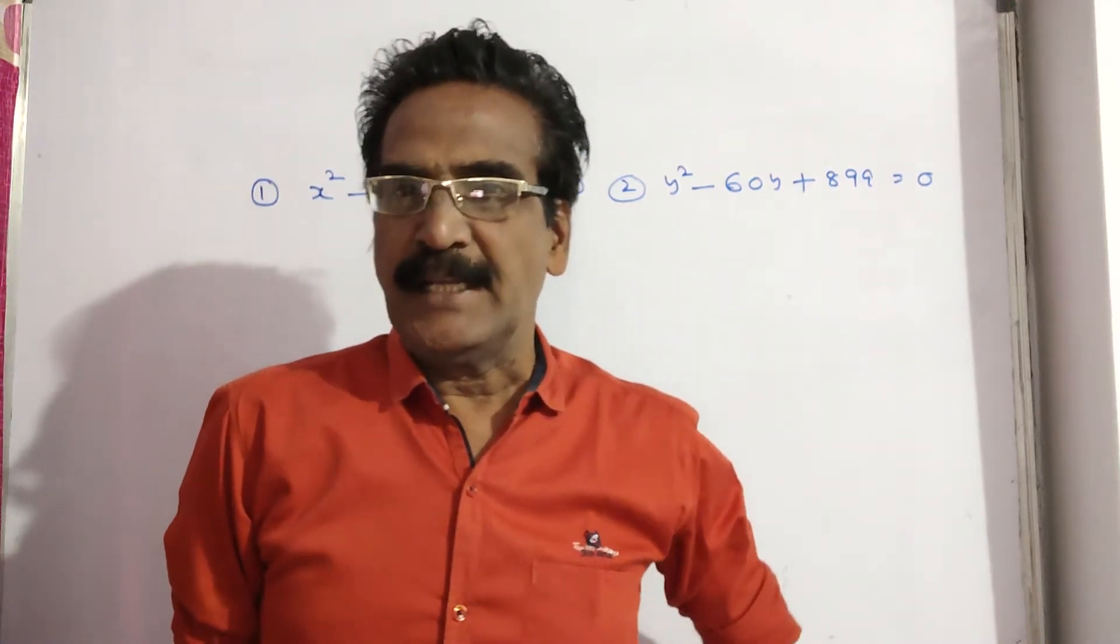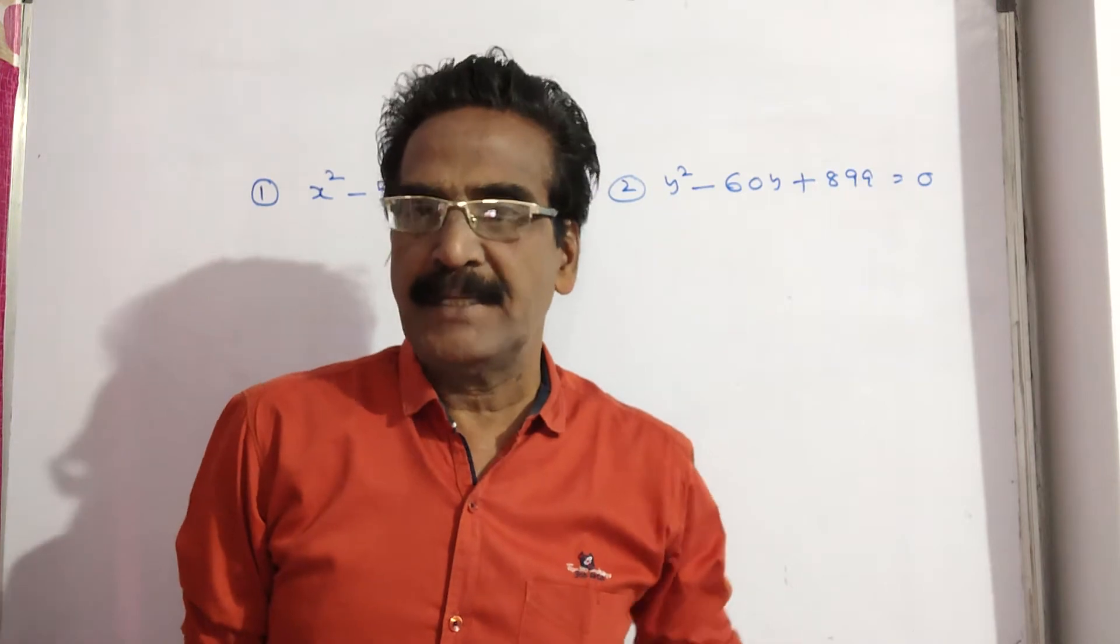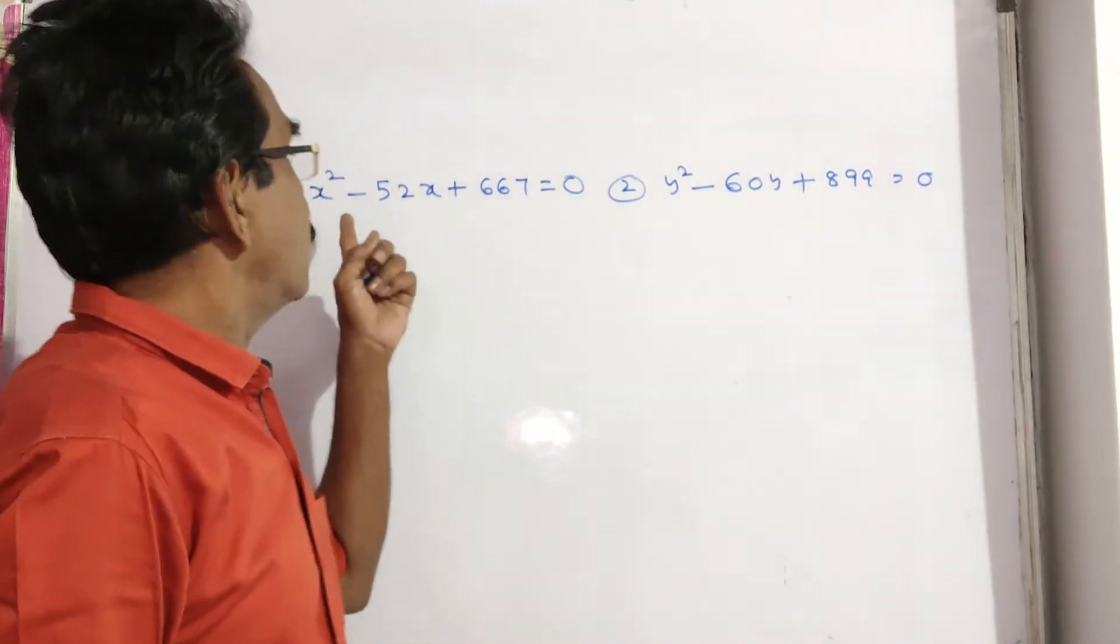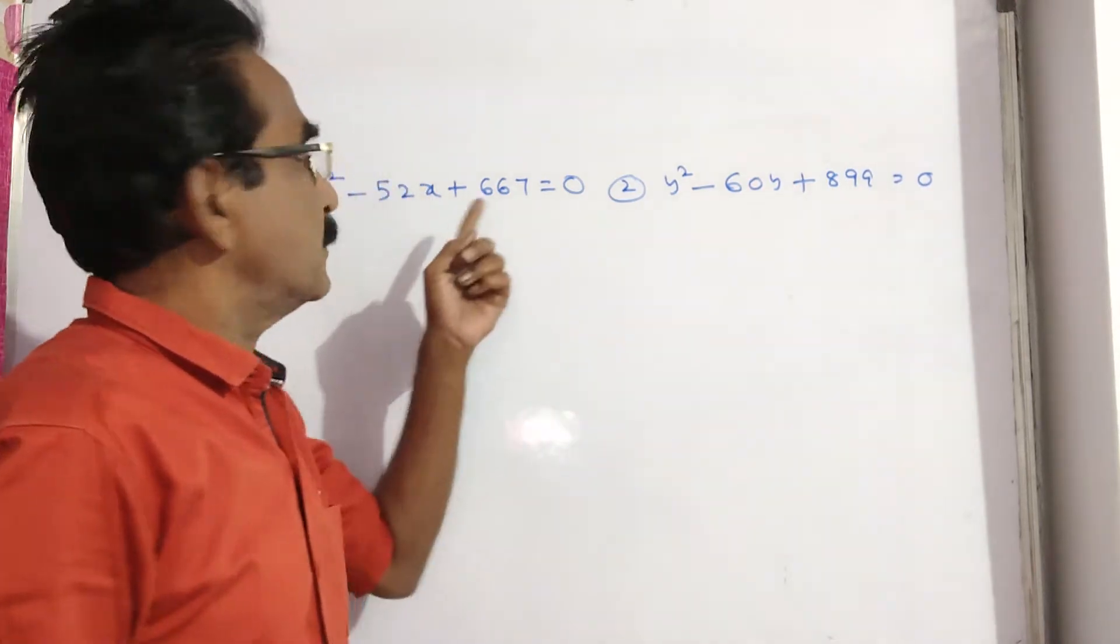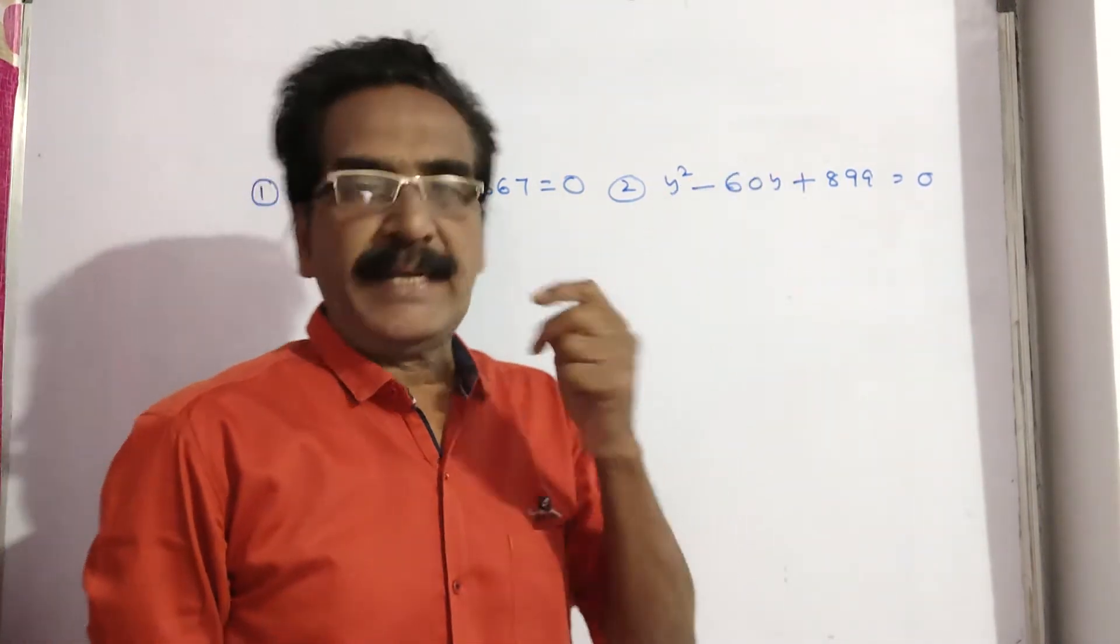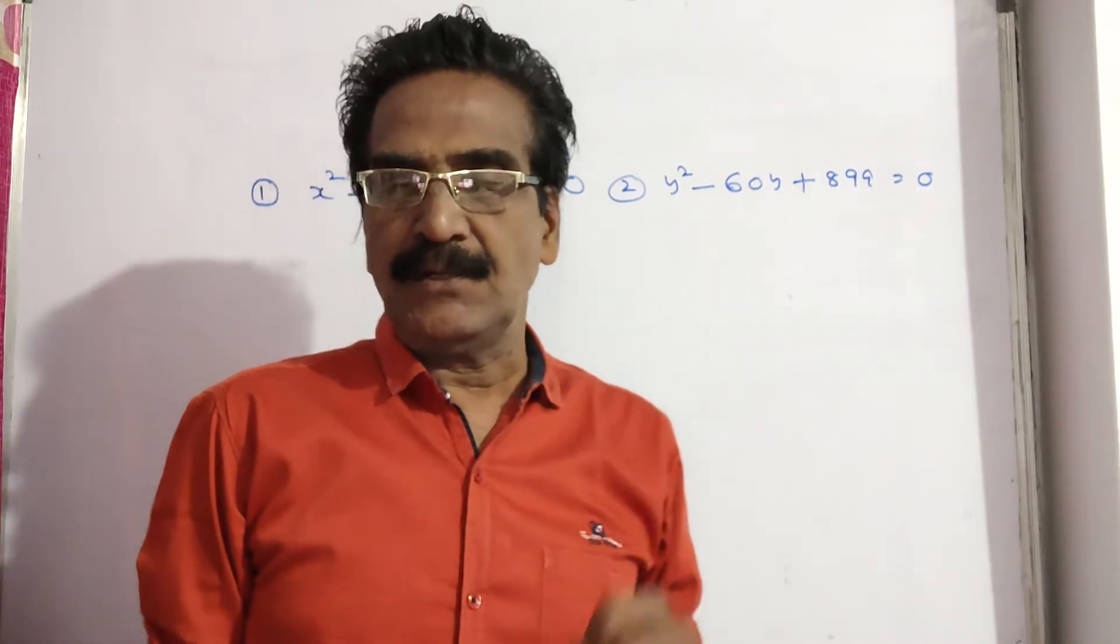Hi friends, good morning. Let us look at the next problem in quadratic equations. See friends, x square minus 52x plus 667 is equal to 0 and y square minus 60y plus 899 is equal to 0.